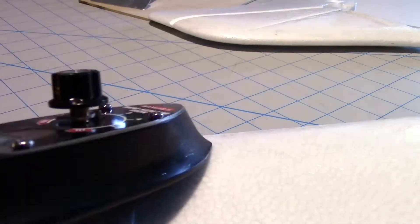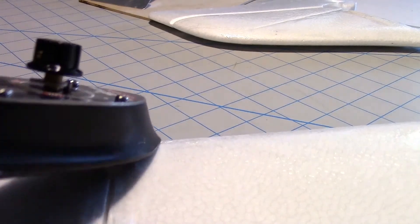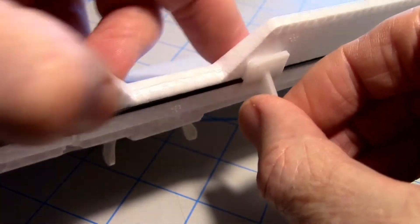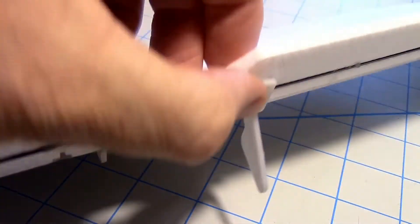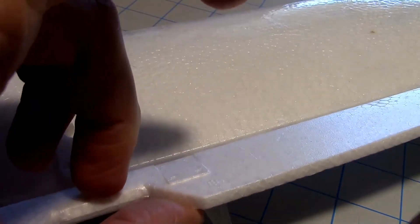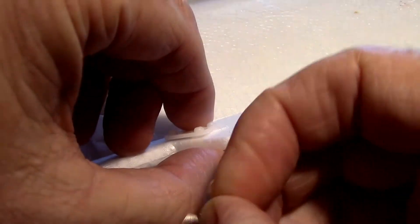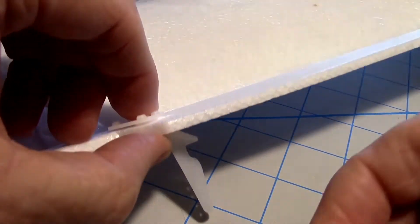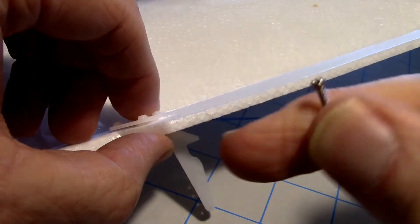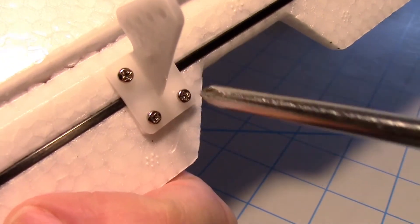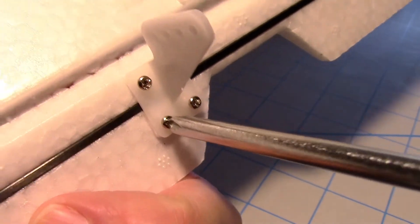For the elevator, the control horn goes on the bottom like that and the plate goes on the top. Then we have to put in the four screws. It's nice the way they got the control horn going across the spar, gives it extra strength. Just tightening up all four screws.